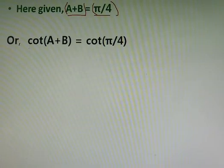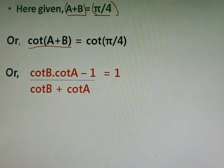Now if you remember the formula of cot A plus B, that will be equals to cot B into cot A minus 1 all divided by cot B plus cot A. So this is the formula of cot A plus B.